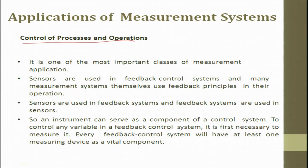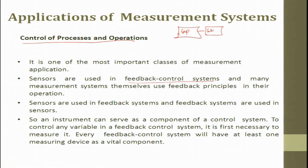When you put things in the other category of control of processes and operations, it is one of the most important classes of measurement applications. Here sensors are used in feedback control systems for controlling the process. When you have an experiment going on, you measure using sensors what is going on, get the output, and then come back and correct the experiment to get a good output. Sensors are used in feedback control systems, and many measurement systems themselves use feedback principles in their operations. Both can be used - a very important point.